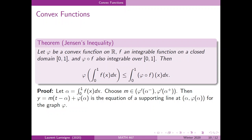Now the main theorem we want to show is Jensen's inequality. Let phi be a convex function on the real line, let f be an integrable function on the closed domain [0, 1], and let the composition of phi and f be integrable over [0, 1]. Then we have that phi of the integral from zero to one of f(x) is less than or equal to the integral from zero to one of the composition of phi and f.